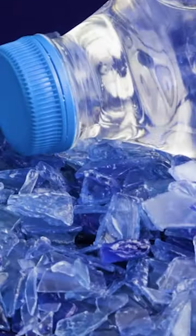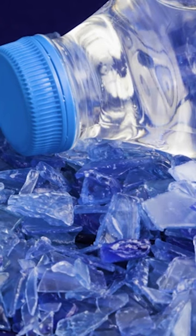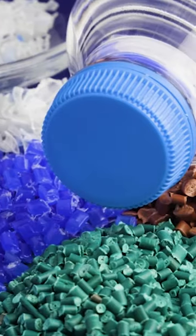The flakes are heated, dried, cooled, and cut into small resin pellets. Adidas melts these pellets to create a filament that is spun into what the company calls ocean plastic, a form of polyester yarn.